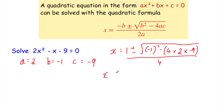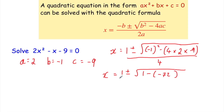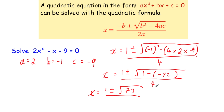Now let's work this out. So x equals 1 plus or minus the square root of — minus 1 squared is 1, because a negative times a negative is a positive. Then we've got our minus, and let's work out what goes inside the brackets: 4 times 2 times minus 9 equals minus 72, close brackets. So now we've got 1 minus minus 72, which is 1 plus 72, giving us 73. So it's the square root of 73, all divided by 4.